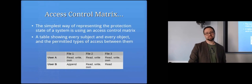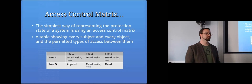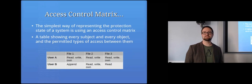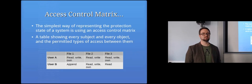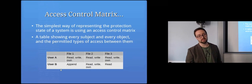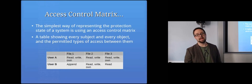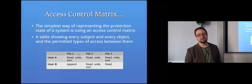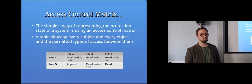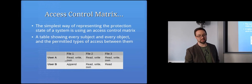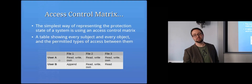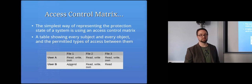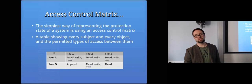An access control matrix is the simplest way of describing a security state — a massive table explaining every single access permission that is possible and whether it's allowed. We have user A, user B, every single user on one axis and every single resource on the other. For each cell, we specify whether and how that subject is allowed to access that object. For example, user A can read and write to file one and owns it, while user B can only append — not read or change the file's contents.